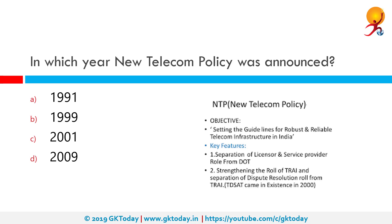In which year was the new telecom policy announced? The correct answer is 1999. There was another new telecom policy back in 1994, but it was not being fulfilled and there had been some far-reaching developments which meant the policy needed to be revamped. The new 1999 policy converged markets and new technologies, realigning the telecom industry.